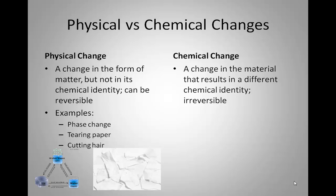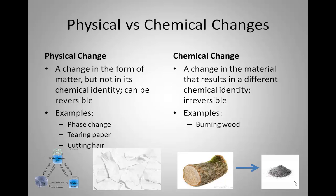A chemical change is a change in the material that results in a different chemical identity, and this is irreversible. This isn't something you can just heat up or cool down to change back into what it was before, like with a phase change. For example, if you burn wood — you've likely had a campfire or used a fireplace. The ash that the wood changes into no longer has the same properties as the wood. You cannot burn ash — it is no longer combustible like the wood was.